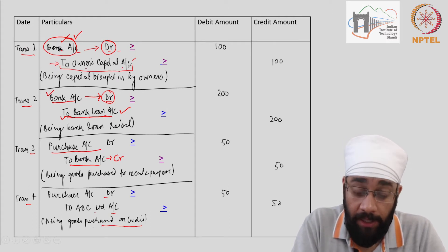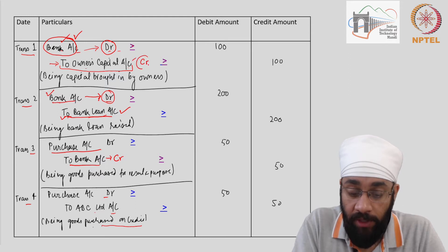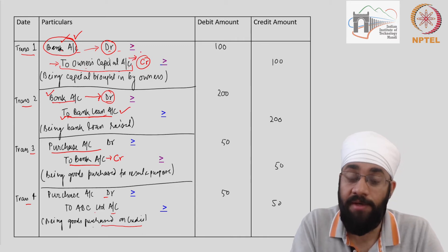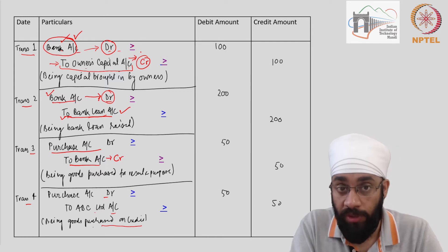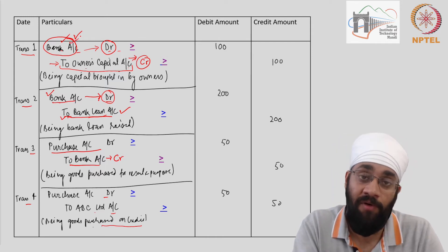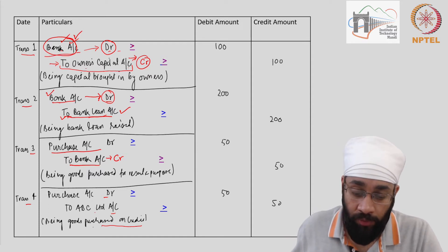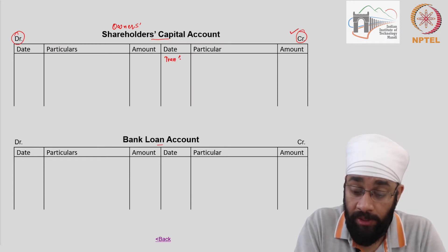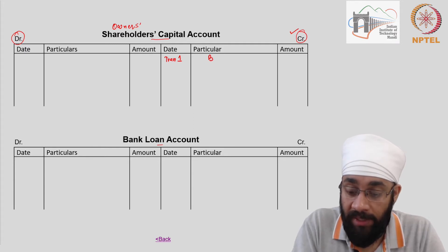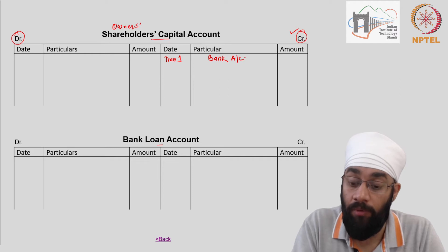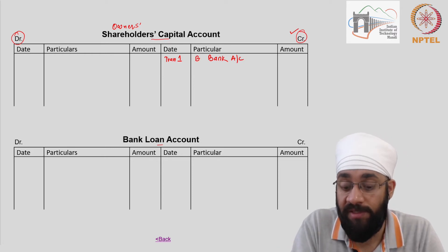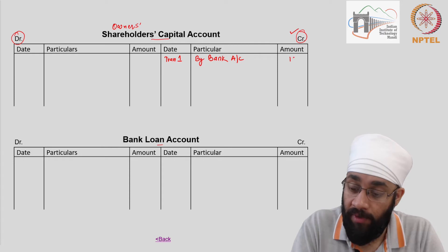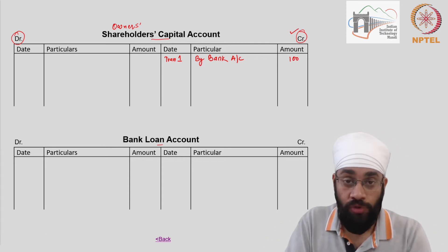The first transaction involves the capital account, and in this journal entry we are crediting the capital account. Therefore, the rule is to go to the credit side of owner's capital account. When we go there, we write the name of the other account involved in this transaction, which is the bank account. So I go to owner's capital account, go to the credit side, write transaction number one, write the name of the other account — bank account — and as convention, prefix it with 'By'. The amount is 100.